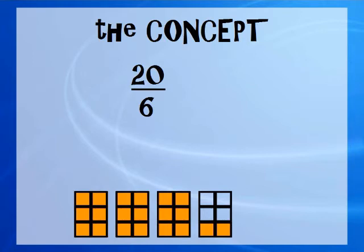So back to the concept. What we did is we took our 20 pieces and we divided them into groups of 6, just like our denominator told us to do, and we end up with this number, which we would call 3 and 2 sixths, 3 wholes and 2 sixths of another fraction. Remember, a mixed number is just a whole number and a fraction put together or added together.